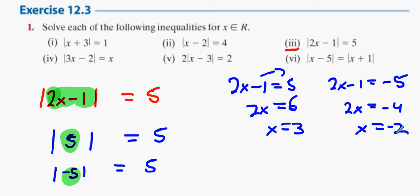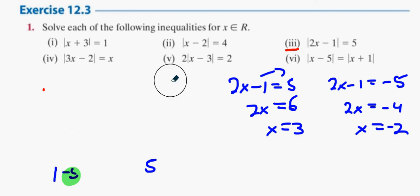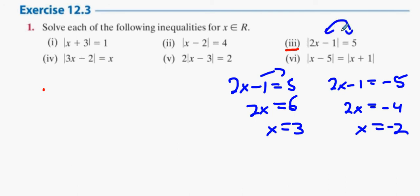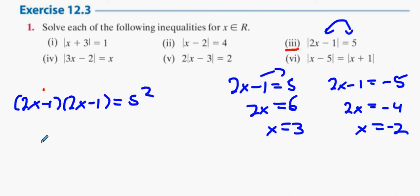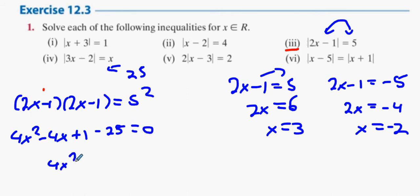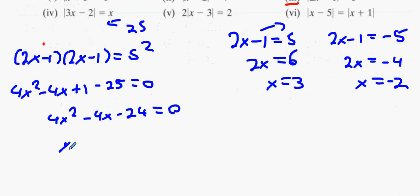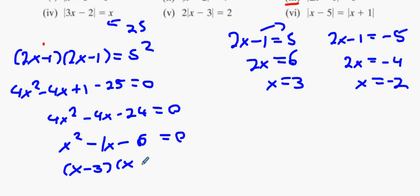The next method is squaring both sides, which is actually handier. So what happens when you square both sides? You get 2x minus 1 multiplied by 2x minus 1 equals 5 squared. That gives you 4x squared minus 4x plus 1 equals 25. Bring it over, minus 25 equals 0, giving you 4x squared minus 4x minus 24 equals 0, divided by 4. And you get exactly the same answer.